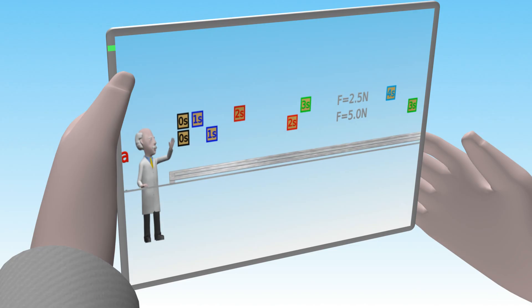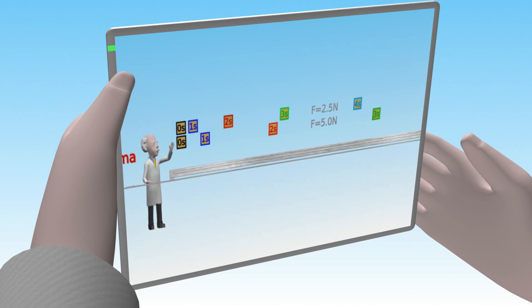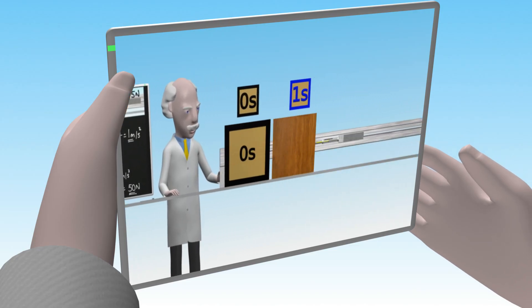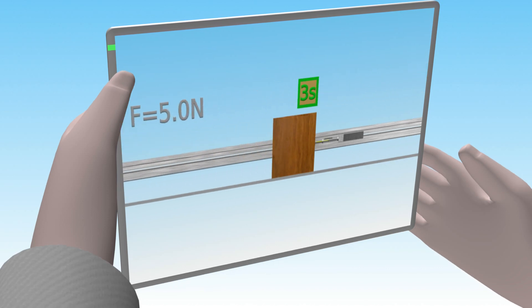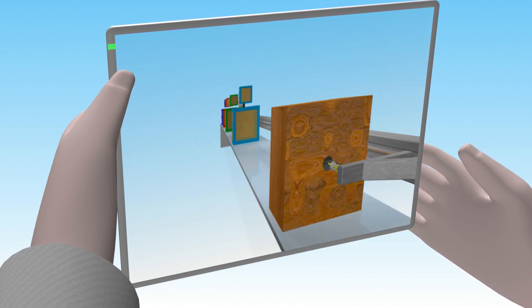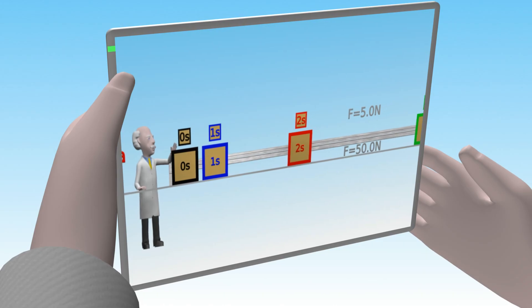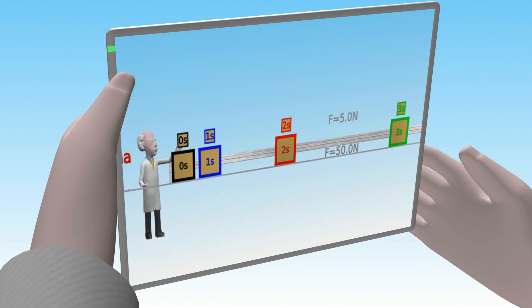We also observed that if we have a non-zero unbalanced force applied to the object, it will accelerate. The larger the force, the greater the acceleration. And for objects with larger mass, we need to apply a larger force to get the same acceleration as a smaller block with a smaller force applied.